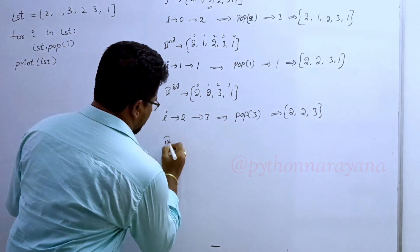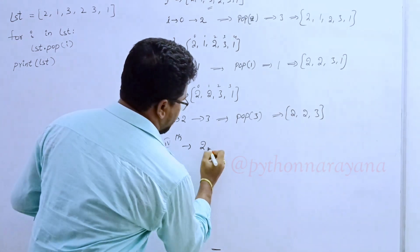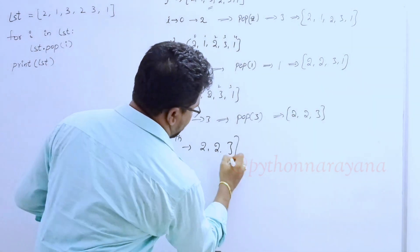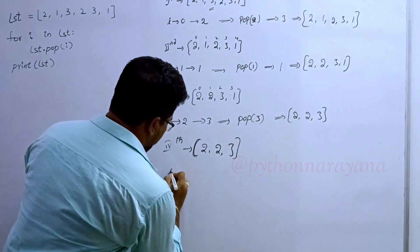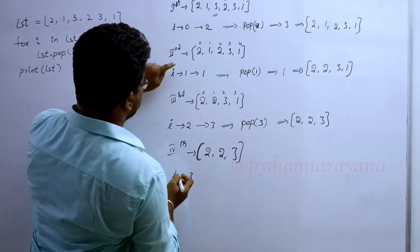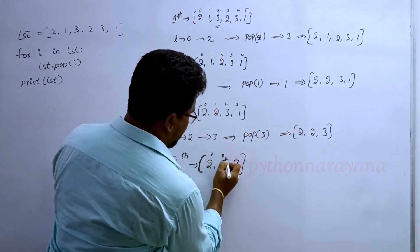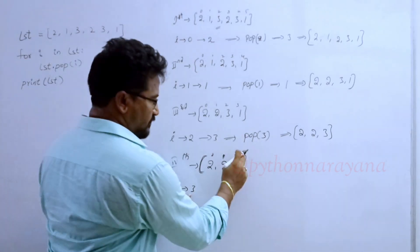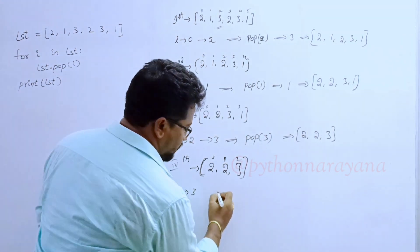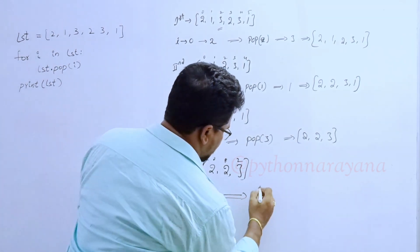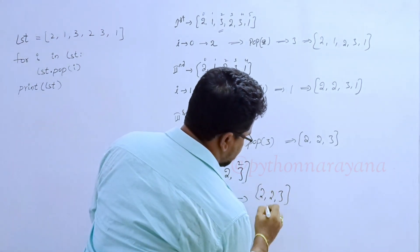Now, iteration 4. In the fourth iteration, the remaining list is 2, 2, 3. Index numbers are 0, 1, 2. But this time i-value is 3. We don't have index number 3 — the 3 is out of range. That's why no more iterations. The final output of the program is 2, 2, 3.